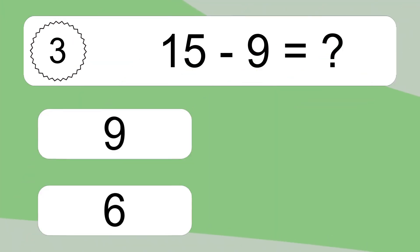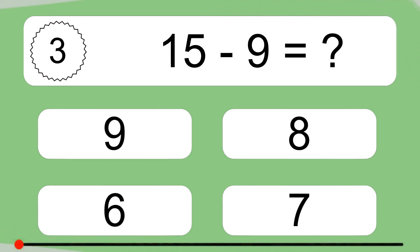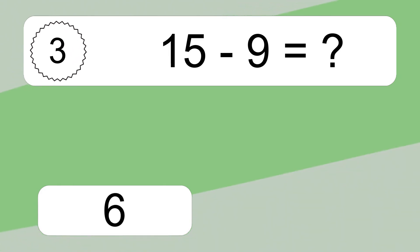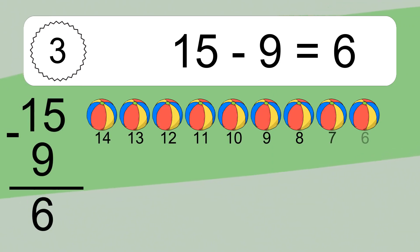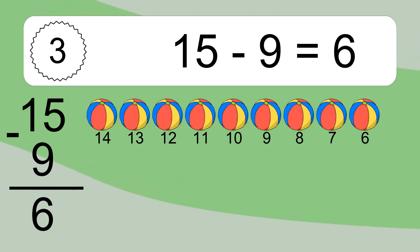15 minus 9 equals what? 15 minus 9 equals 6. Let's count it: 14, 13, 12, 11, 10, 9, 8, 7, 6.